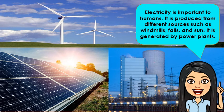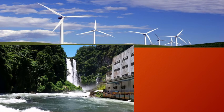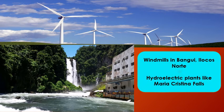Electricity is important to humans. It is produced from different sources such as windmills, poles, and the sun. It is generated by power plants. Power plants include the windmills in Bangui, Ilocos Norte, and hydroelectric plants like the Maria Cristina Falls. Electricity from power plants travels through wires to reach your house and different places.